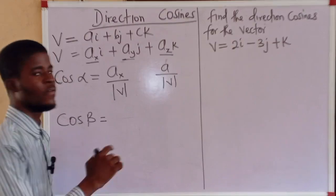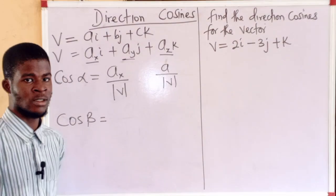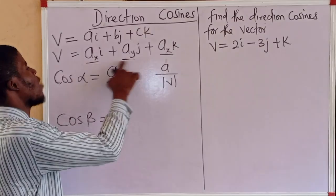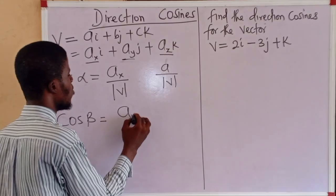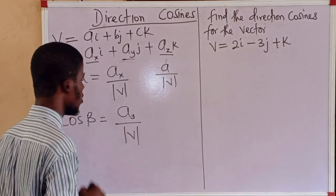The second direction cosine is cos beta. Beta is the angle between the vector and the y axis. So, we are taking the y component, a sub y, all over the modulus of the vector itself.